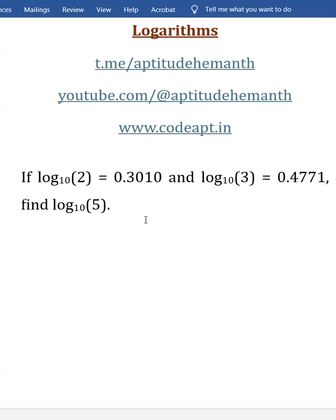Here log 2 value is given, log 3 value is given with respect to base 10. Log 2 base 10 is 0.301. Log 3 base 10 is 0.4771. And the question is asked to calculate log 5 value.